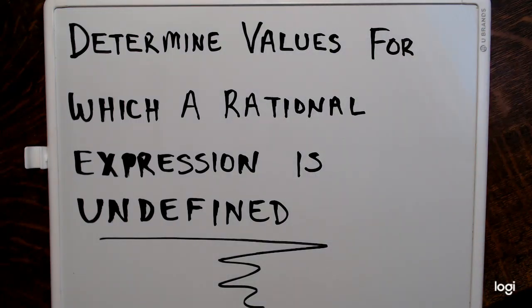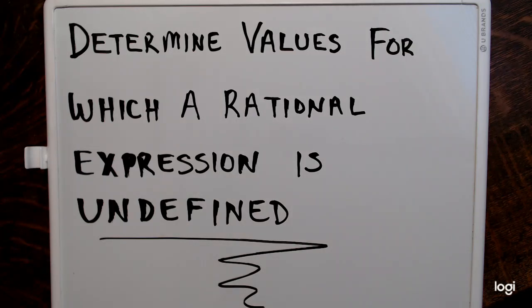Hello and welcome to this video on determining values for which a rational expression is undefined. A rational expression is simply a fraction where the numerator and denominator are both polynomials — it's a ratio of two polynomials. In this video, I have a few examples where I'm asked to find the values for which a certain rational expression is undefined.